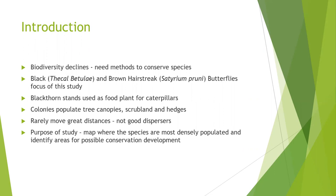The focus of this study were the black and brown hairstreak butterflies. These two species are quite specialist butterflies because they only use blackthorn stands as food plants for their caterpillars. The adults live in colonies and populate tree canopies, scrubland areas and hedges, and they rarely move great distances, so they're not very good dispersers. The purpose of this study was to map where the species are most densely populated and identify areas for possible conservation development.